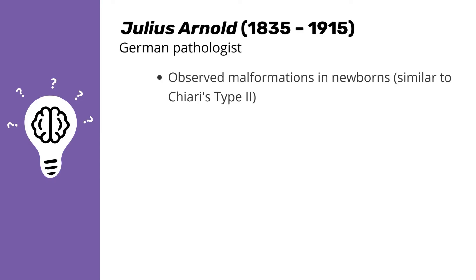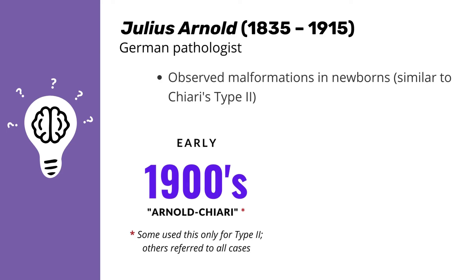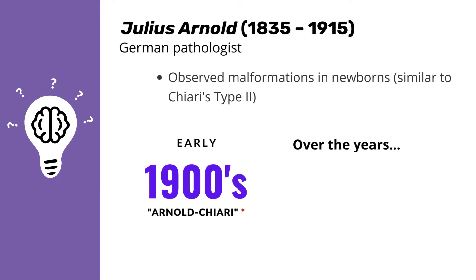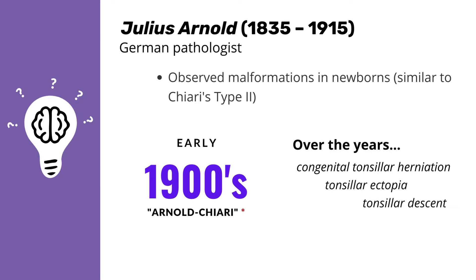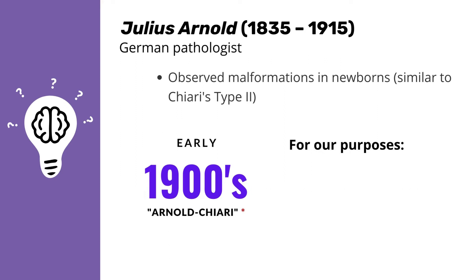A few years after Chiari published his paper, Julius Arnold published his observations of malformations in newborns, similar to Chiari's Type 2. And in the early 1900s, people started using the term Arnold Chiari. Some people used this only for Type 2, while others referred to all cases as Arnold Chiari. Adding to the confusion, over the years other names and terms have been introduced in the literature. But for our purposes, when we refer to Chiari, we mean Chiari malformation type 1.